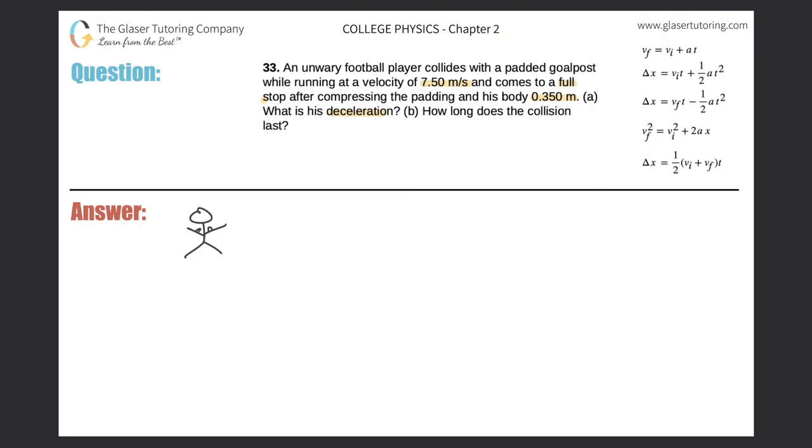So now he's traveling right at a certain velocity. Let's draw this little arrow. And initially it says that he's moving at a velocity of 7.50 meters per second. And eventually he's going to come in contact with this padding. That's essentially going to be compressed. So basically he's going to hit the padding about here.